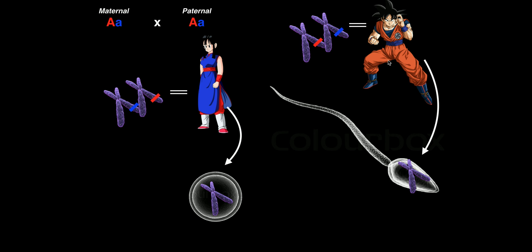Let's consider this example. We've got our male here, which produces sperm cells. We've got our female here, which produces eggs. We know that each chromosome is going to be present in two copies in every somatic cell of these individuals. So let's say this is chromosome one — there are two copies of chromosome one.